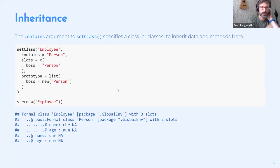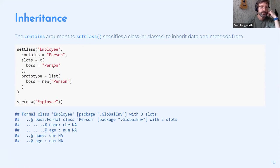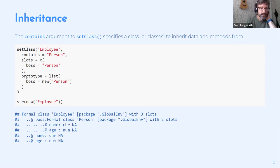Inheritance is built into S4 classes via the `contains` argument to `setClass`. For example, an `Employee` class can contain `Person`, inheriting its slots, and then add its own slots — like a `boss` slot that is itself a `Person` object. When you create an instance of `Employee`, it has three slots: `boss`, `name`, and `age`, where `name` and `age` come from inheritance, and `boss` is a nested `Person` object with its own `name` and `age`.